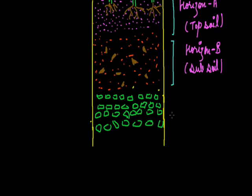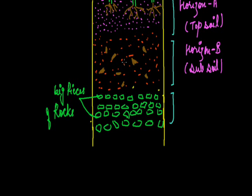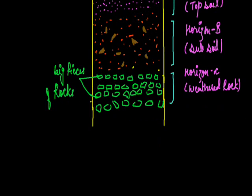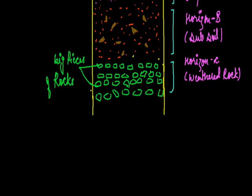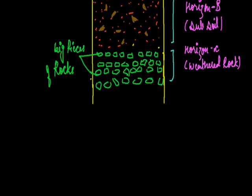Horizon C contains big pieces of rock particles — big pieces of weathered rock. This is the weathered part of the soil profile, where rocks are present in smaller pieces due to weathering.